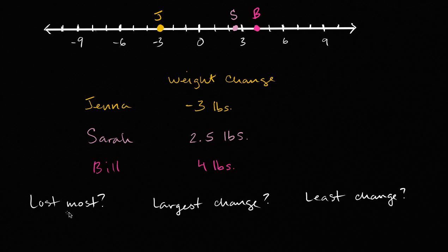Now let's answer the question, who lost the most? So when we talk about lost, we care about direction. Who moved most to the left of zero? Well Sarah and Bill didn't move to the left of zero at all. They gained weight. That's why they're to the right of zero. Jenna's the only person who lost anything. So the person who lost the most is Jenna.